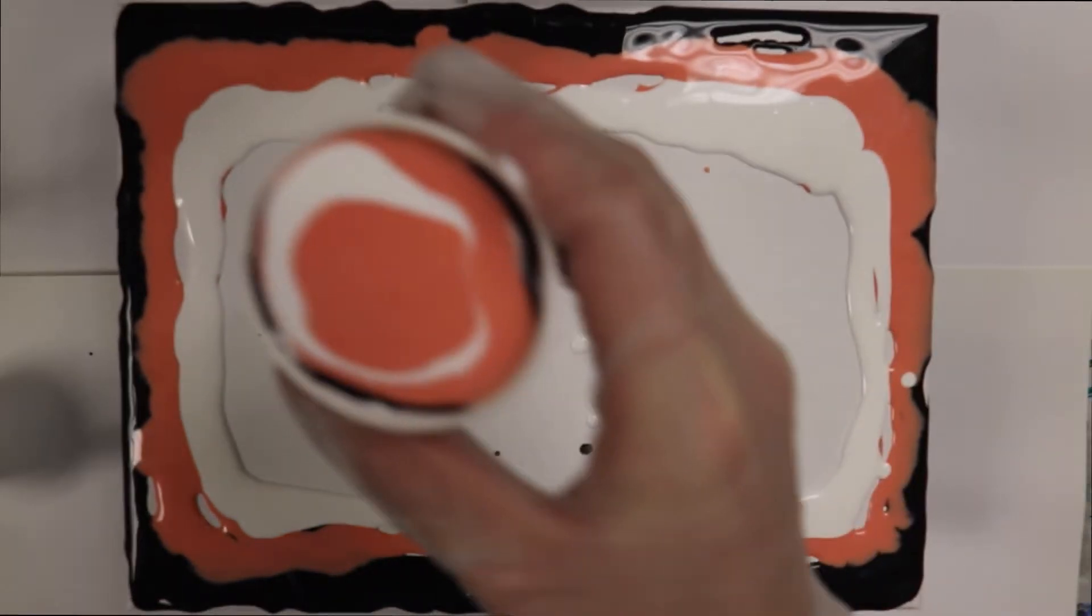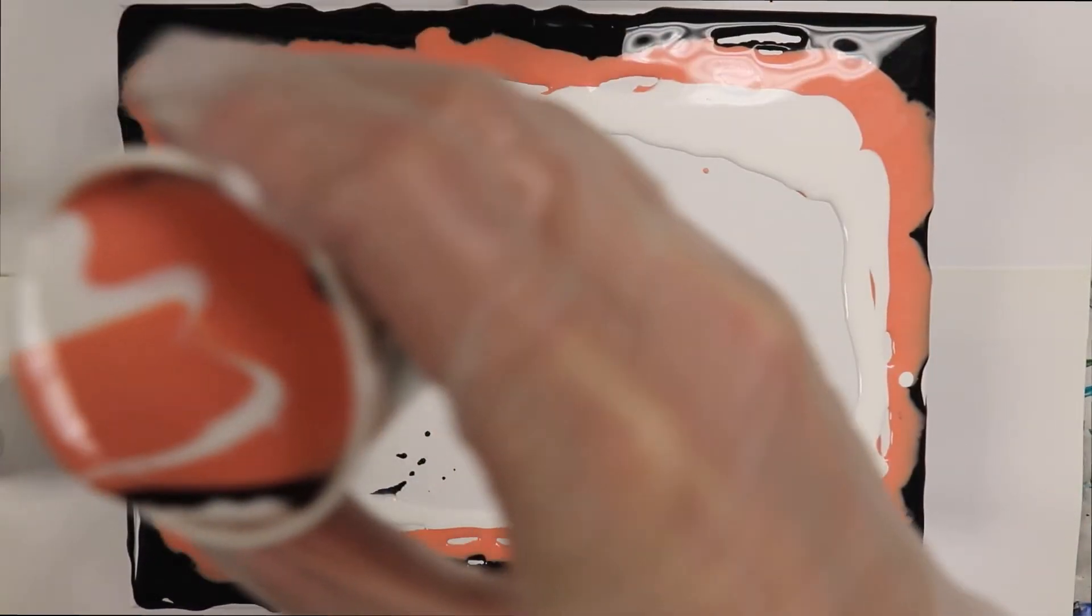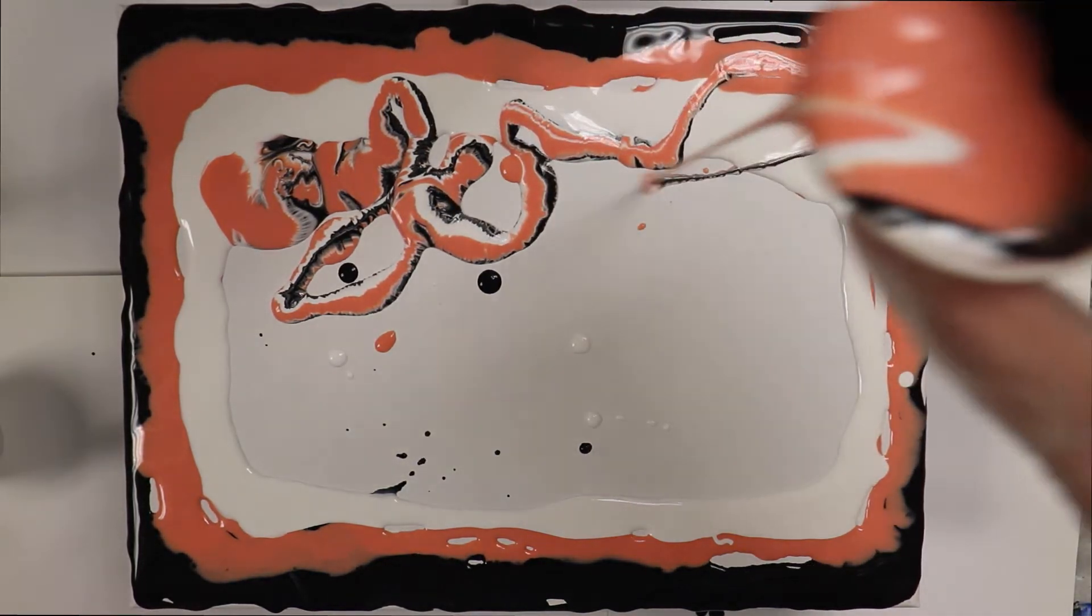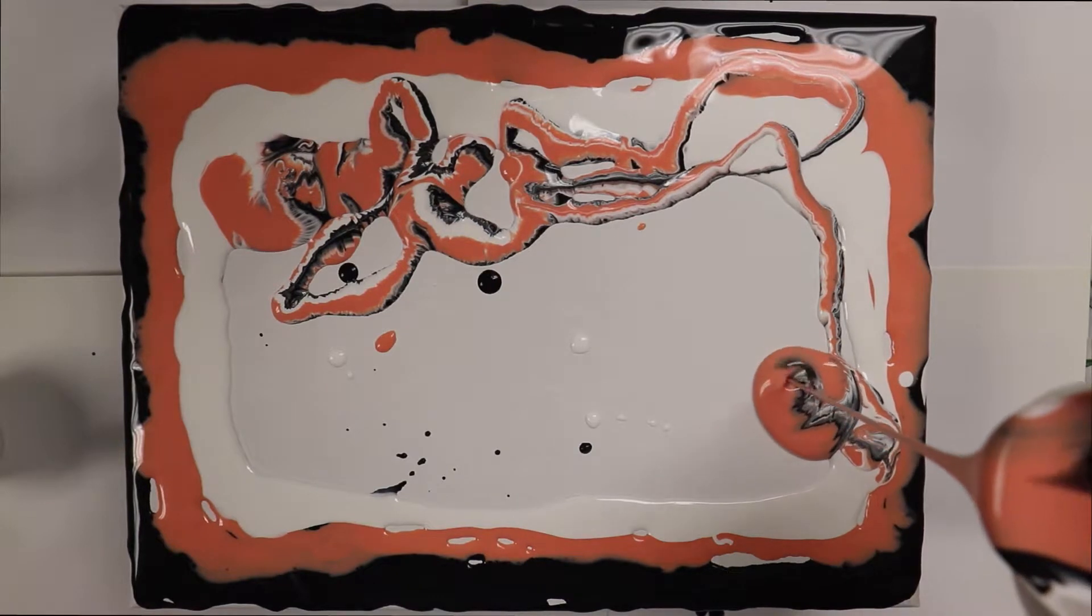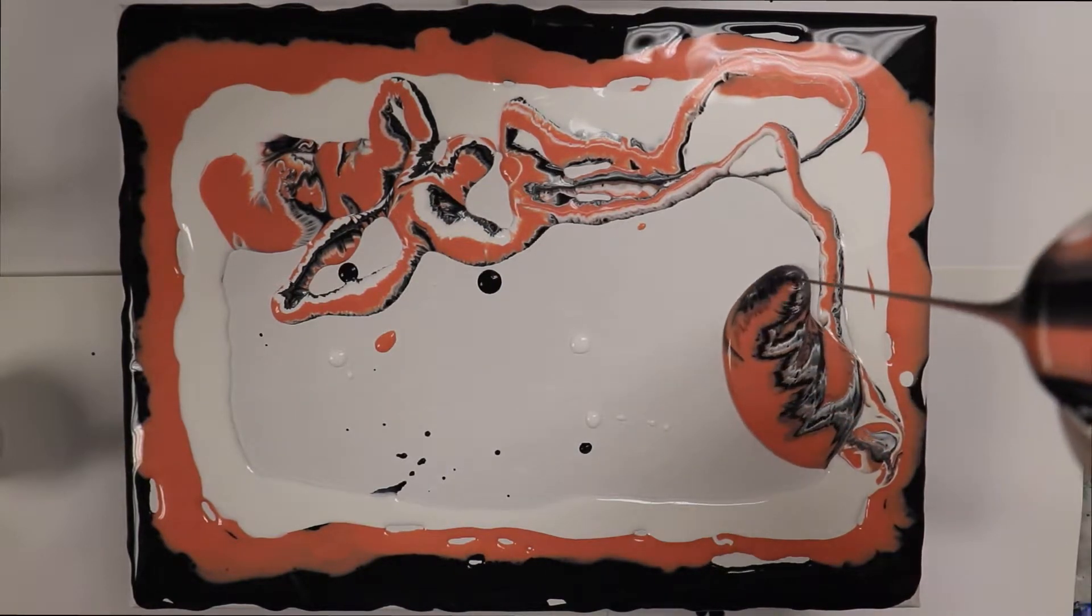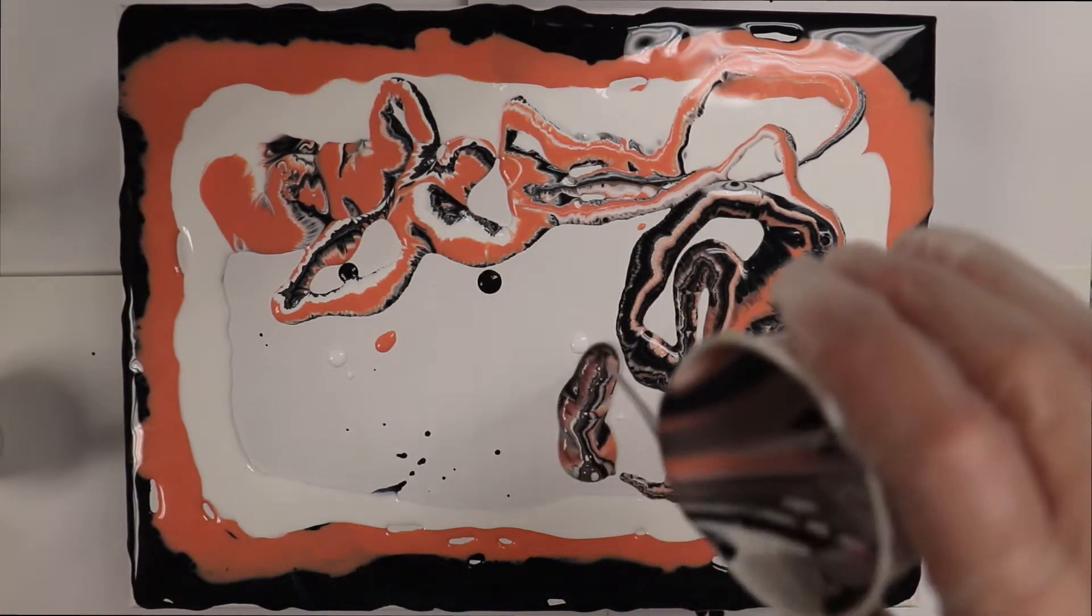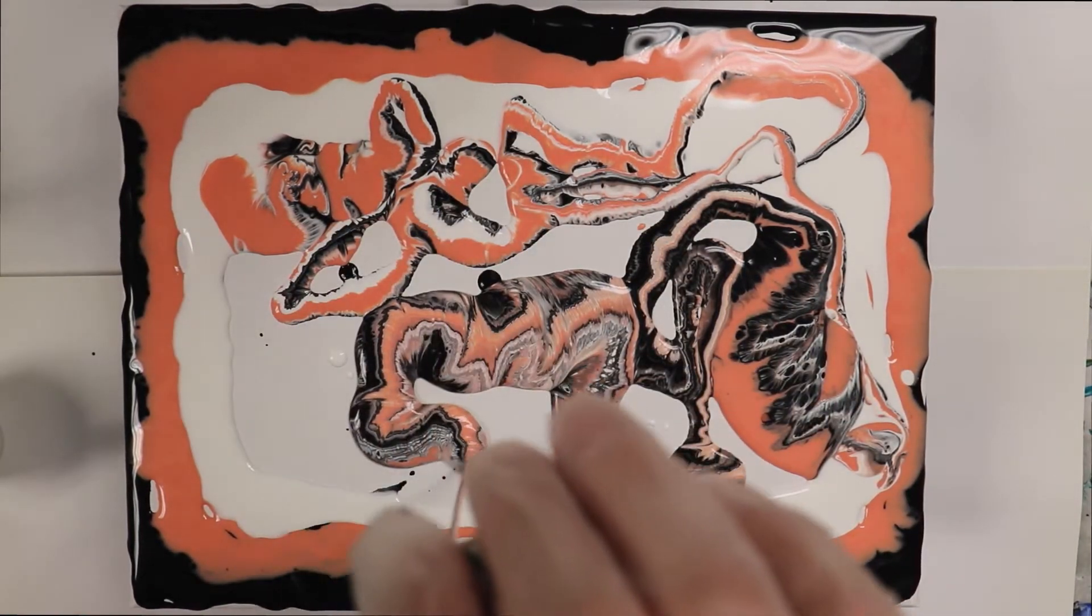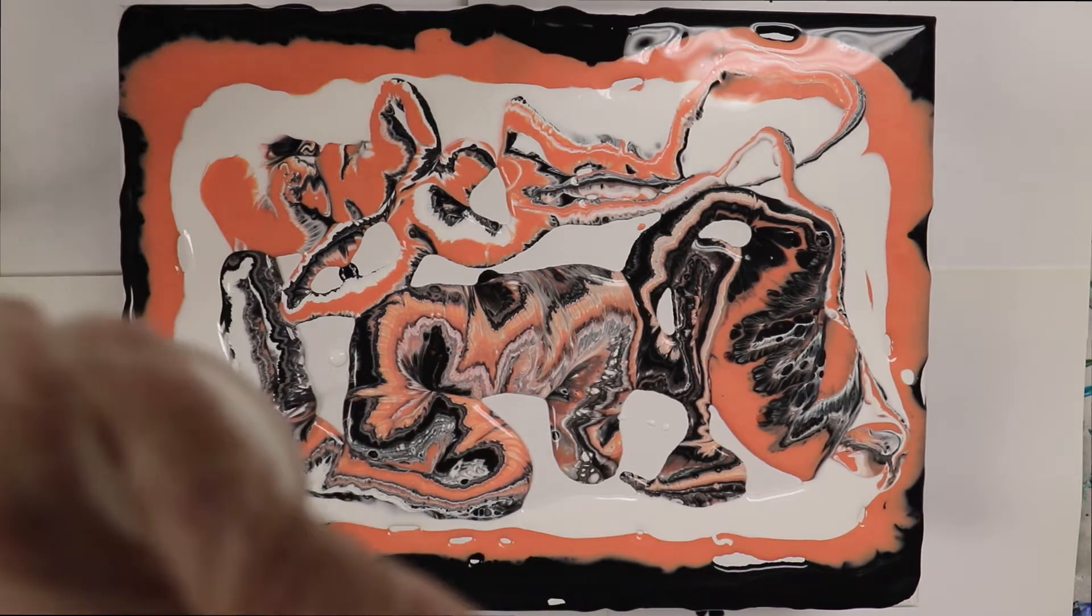So I've never done a painting quite like this before. Usually I'll do like a flip cup or a swipe, something like that. But I noticed when I have a finished painting that the paint that drips off the edges onto my paper below looks really cool, so I thought it would be fun to try pouring from up high above my canvas and see if I could get that same drippy effect. So that's what I'm doing here.